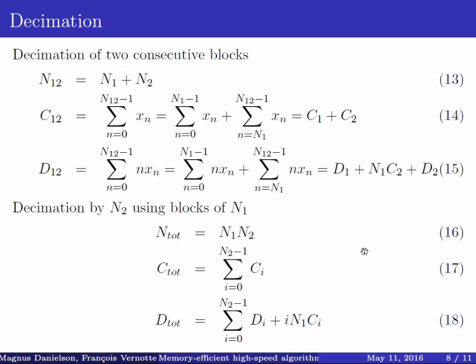So this shows you how you can take two blocks. These blocks do not have to be the same size. So you can use this as part of an induction proof for the case where you have a number of blocks, which is what I do here. Here I have already blocks with N1 samples. I have N2 such consecutive blocks. I can then, using these formulas, decimate those blocks to larger blocks.